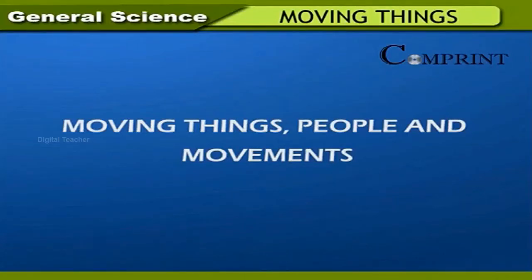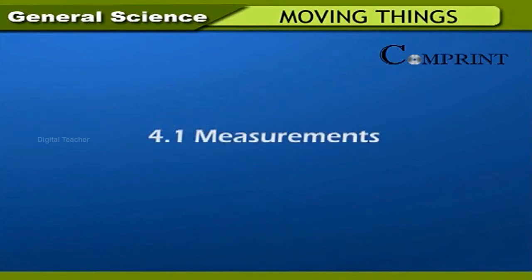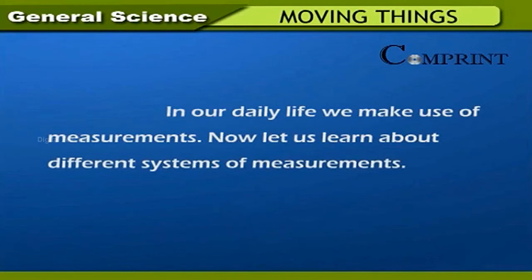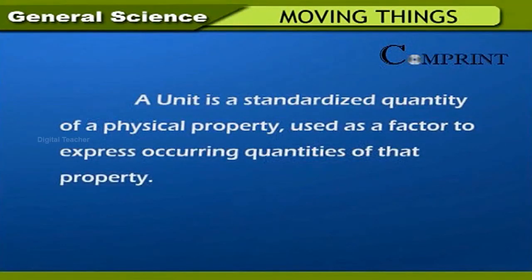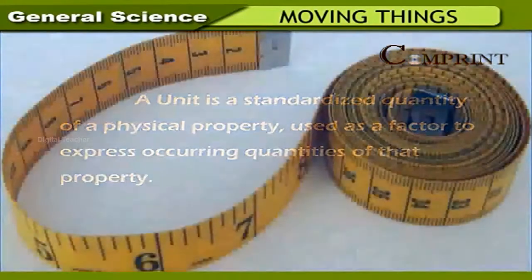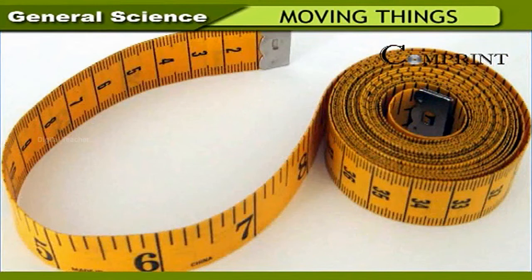In our daily life we make use of various measurements. In olden days, the length of cloth, land, and other things were measured using hand measurement, palm span, cubit, fathom, and foot. A unit is a standardized quantity of a physical property used as a factor to express occurring quantities of that property. Measurements used to measure length, mass, and time are called fundamental measurements or basic measurements.